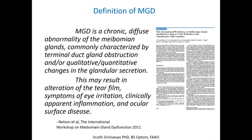This slide shows the definition of meibomian gland dysfunction from the report of the international workshop on MGD. MGD is a chronic diffuse abnormality of the meibomian glands, commonly characterized by terminal duct gland obstruction and qualitative or quantitative changes in the glandular secretion. This may result in alteration of the tear film, symptoms of eye irritation, clinically apparent inflammation, and ocular surface disease.